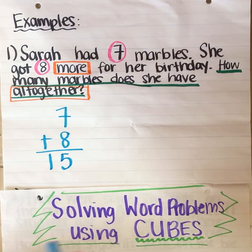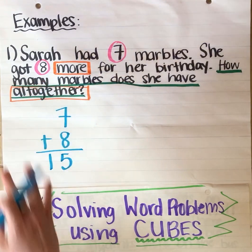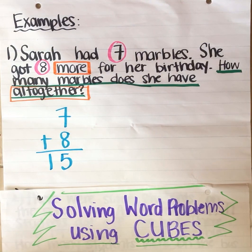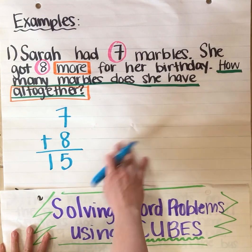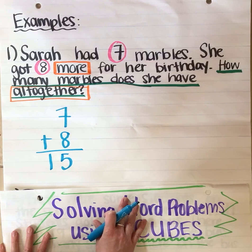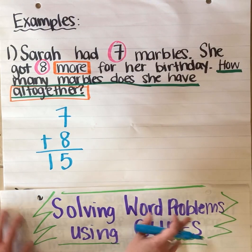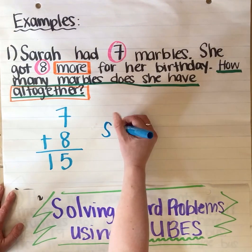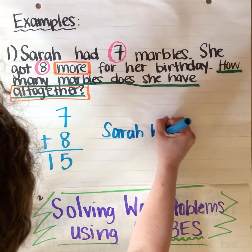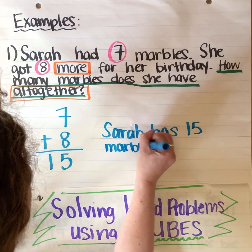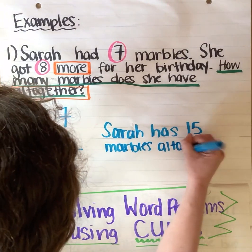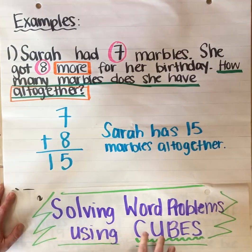Now usually with word problems, if the question is asked in a sentence you should be answering it in a sentence. Because of distance learning, usually I would give you fill-in-the-blanks to make it easier. So instead of having you write out the whole sentence — which you can definitely do — you can record yourself giving the answer. Or you could write out that Sarah has 15 marbles all together.